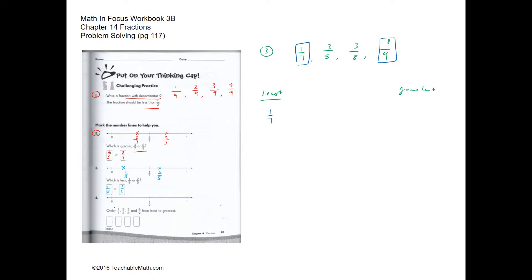We just need to compare three fifths and three eighths. For three eighths, we are dividing our whole into eight equal parts and only taking three of them, so three eighths is less than three fifths.